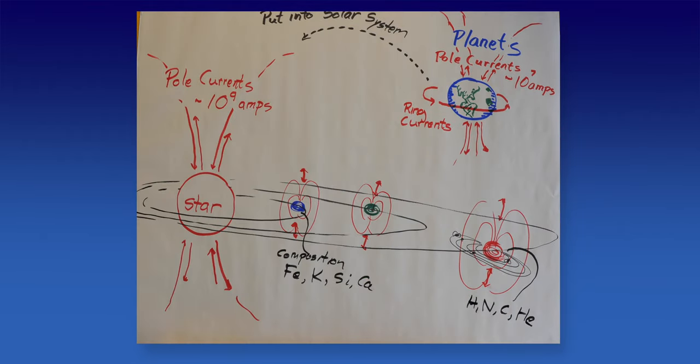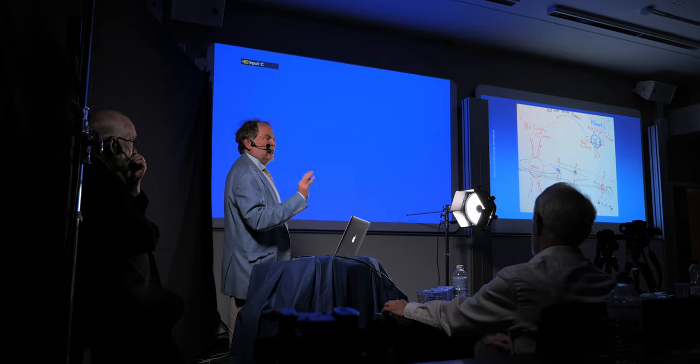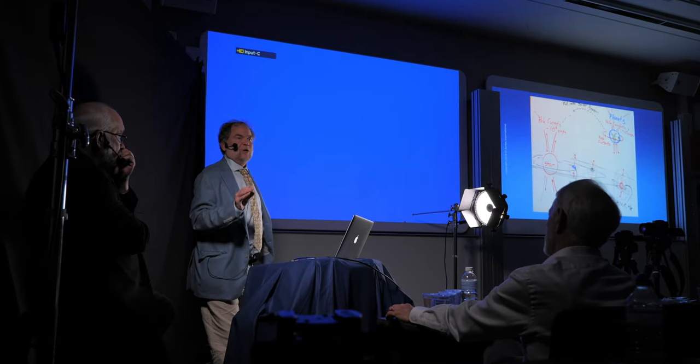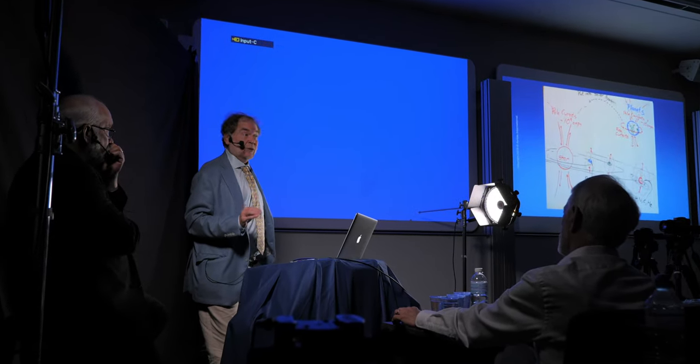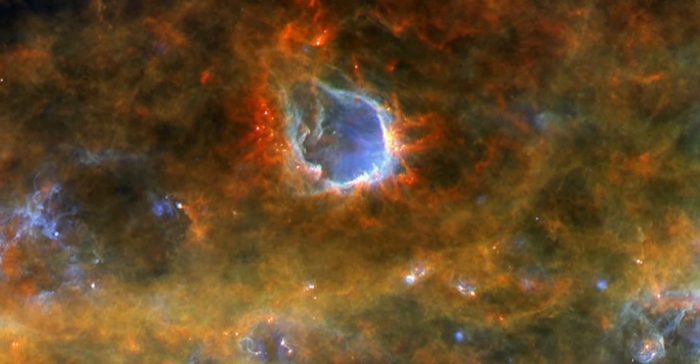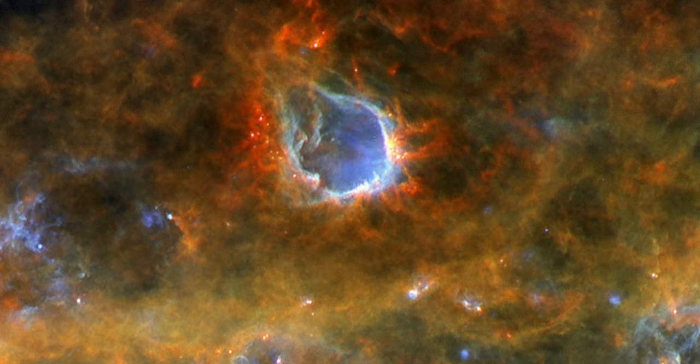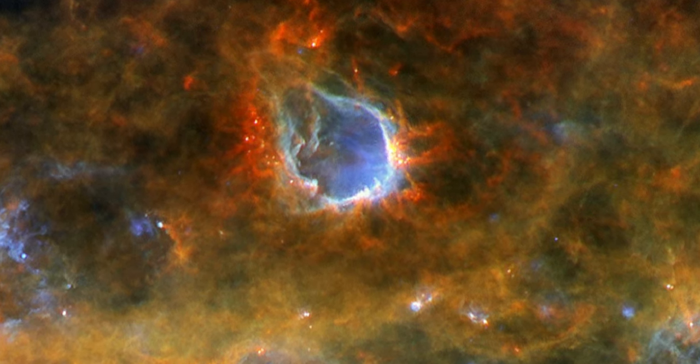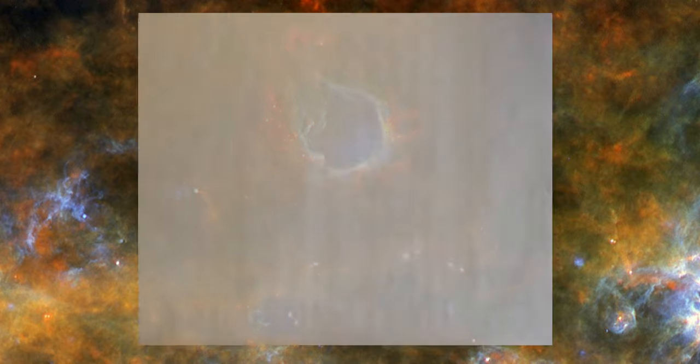So composition of planets, as Wall so well said years ago, we understand planetary formation so little currently that we need a different theory of planetary formation for every planet in our solar system. One of the patterns that we see in electrical systems throughout all of nature is membranes, boundaries. Plasma naturally forms its own version of a membrane or a boundary.